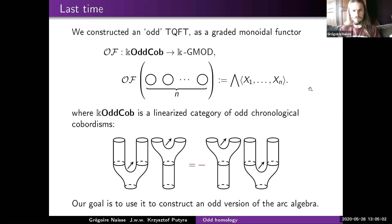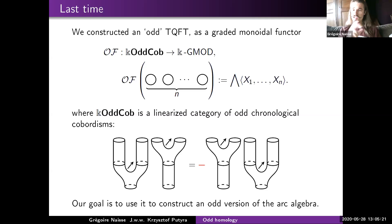When you have a merge cobordism, it coincides with an exterior product in your algebra, so orientation doesn't matter. But when you have a split, it is morally multiplication on the left by some degree-one element, so if you exchange two splits, you get a sign because you are commuting variables in your exterior algebra. This is the important feature of chronological cobordisms. If you redo the cube of resolutions using this odd TQFT, you get a cube where faces can commute or anti-commute, but you can always twist signs at each edge to get an anti-commutative cube.